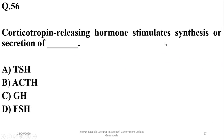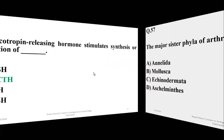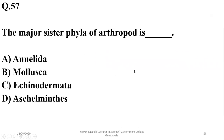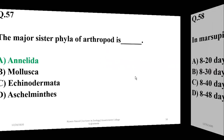Question 56: Corticotropin-releasing hormone stimulates synthesis and secretion of ACTH (adrenocorticotrophic hormone) for the release of steroid hormones from the adrenal cortex. Question 57: The major sister group of Arthropoda is Annelida, because arthropods and annelids have various similarities.